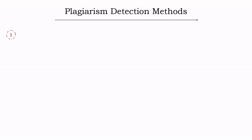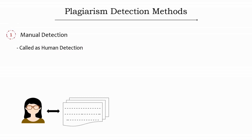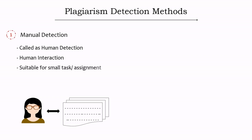Now, moving towards the detection methods of text plagiarism. The first type is manual detection. Before the digital world, the examiner or teacher checked written documents manually one by one — which is why manual detection is also called human detection. It involves pure human interaction, is mostly suitable for small tasks or assignments, and is a time-consuming process requiring a lot of human effort.